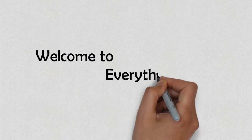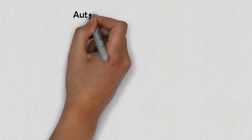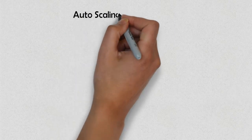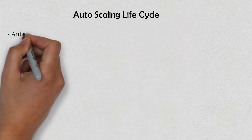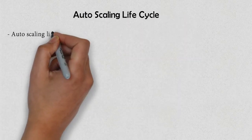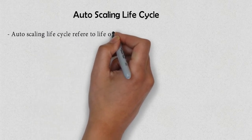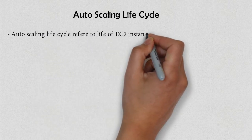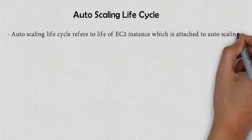Welcome to Everything Cloud. In this video, we are going to see Autoscaling Life Cycle. Autoscaling Life Cycle refers to the life of an EC2 instance which is attached to the autoscaling.